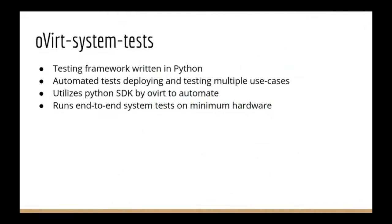After setting up a mock RHHI environment, we can run tests on the recreated systems. The oVirt System Test is a framework written in Python which helps automate these tests and covers multiple cases. It uses the Python SDK provided by oVirt to automate test cases and complete them with minimum hardware requirements. The tests are broadly divided into two categories: bootstrap tests, which are required during setup as baseline checks, and functional tests — the expected results once a setup is completed.